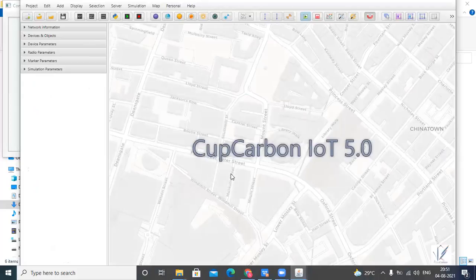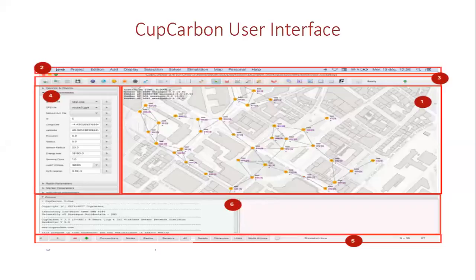This is the CupCarbon simulator environment. After executing the CupCarbon JAR file, you can see the CupCarbon working environment and its user interface. The part labeled one is the map at the center. The part labeled two is the menu bar on the top. The part labeled three is the toolbar, which is below the menu bar. The part labeled four is the parameter menu on the left.